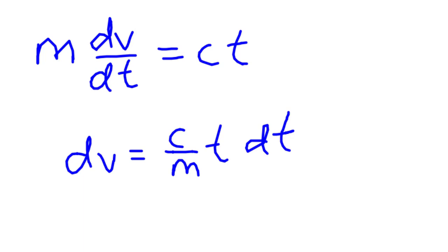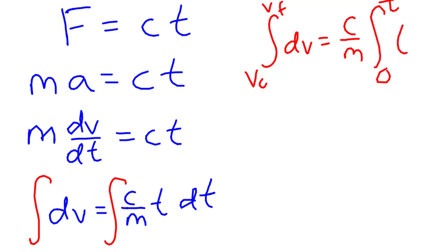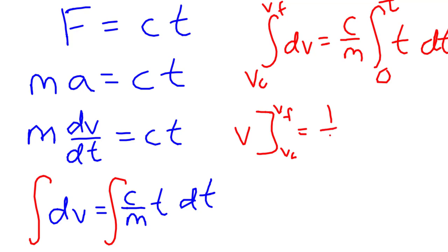We have a perfect place to do an integral. We have an integral on both sides. On the left-hand side, we're going from velocity initial to velocity final and that is dv. On the right-hand side, c and m are constants, and we're going from time zero to time t, with t dt. The integral of dv is v for velocity — we have v final and v initial. We have our constants c over m, and the integral of t is one-half t squared.